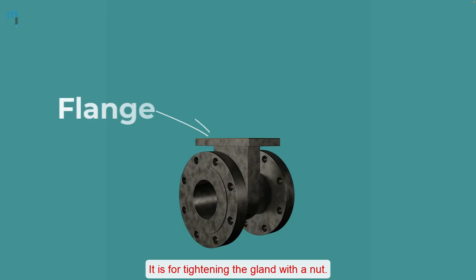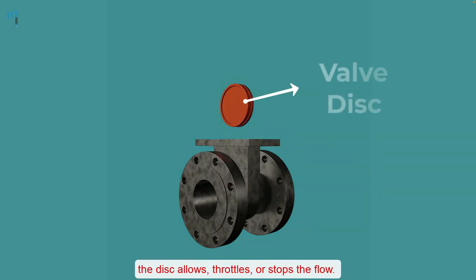Flange: It is for tightening the gland with a nut. Gate or disc: The disc allows, throttles or stops the flow.